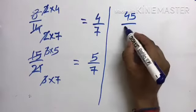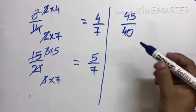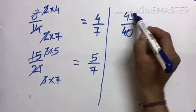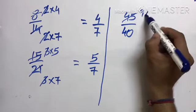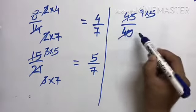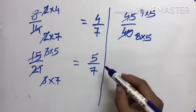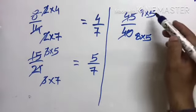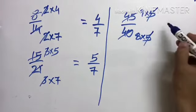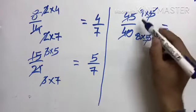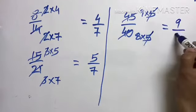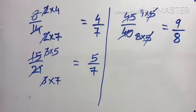45 by 40. This is 9 times 5, and this is 8 times 5. So numerator and denominator, 5 and 5 cut. Our answer is 9 by 8, understood?